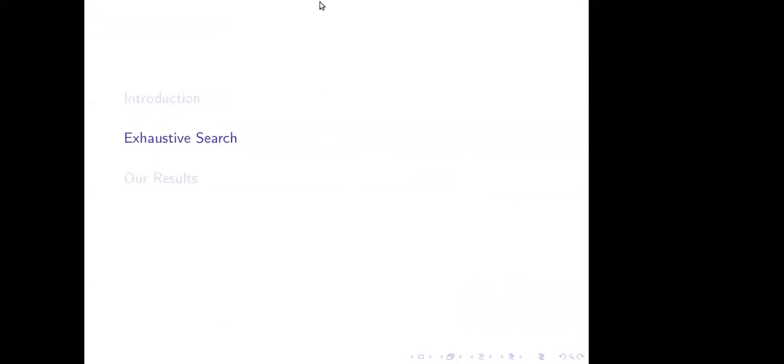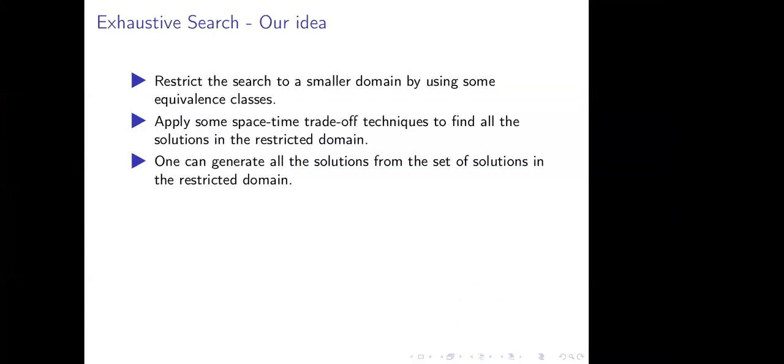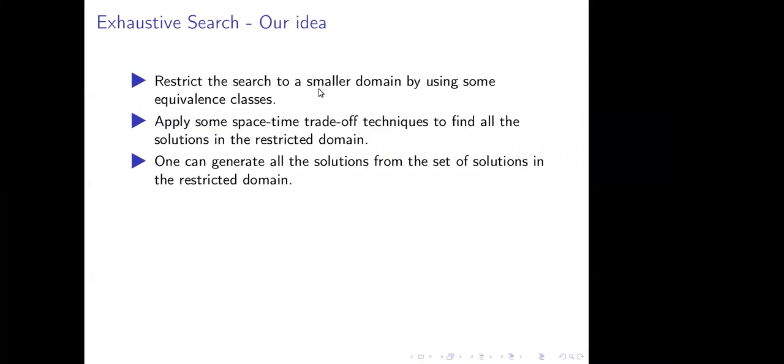So, what is our idea? Our idea is to do exhaustive search. An exhaustive search examines every possible solution inside the search region and thus gives the best possible solution. Please note that exhaustive search is not possible by naive approach, which we will see in next coming slides. How we are going to do that? First of all, we will restrict the search to a smaller domain by using some linear algebra tools. Then we will apply some space-time trade-off technique to find the solution in the restricted domain. Once we have the set of all the solutions in restricted domain, we can generate all the solutions from the set of restricted domain to a full domain by using some lemmas, some results.